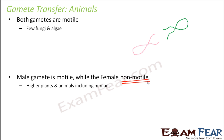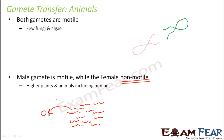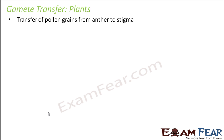Since only the male gamete is motile, it is the male gamete's responsibility to reach the female gamete. Because the female gamete is static and the male gamete travels from some distance, the chances of reaching the female gamete are very low. Therefore, a large number of male gametes are produced so that at least some will reach the female gamete. In human beings, for example, millions of sperms are produced whereas only one egg is produced.